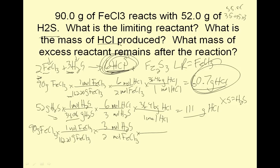My molar mass of H2S is 34.08. One mole of H2S, grams of H2S. 90 divided by 162.20 times 3 divided by 2 times 34.08 is 28.4 grams of H2S needed. How much do I have? 52 grams. 52 minus 28.4 equals 23.6 grams excess H2S.